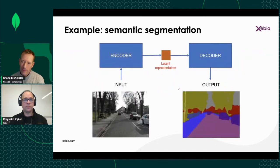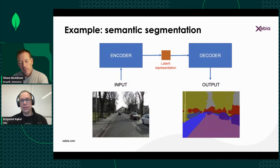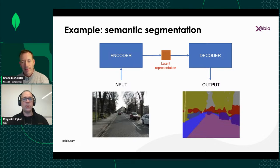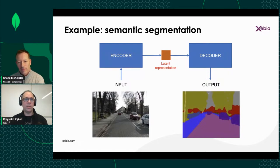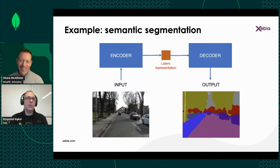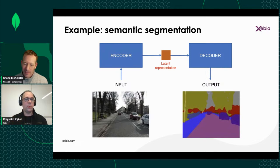Encoder-decoder architecture goes even further: train it with street images as input and object maps (street, sidewalk, car, trees, sky) as output — used in hundreds of thousands of examples — and you get a network able to detect objects on the street, widely used in autonomous cars. Encoder-decoder architectures are now used everywhere: LLMs are encoder-decoders, image generation is encoder-decoder, everything.